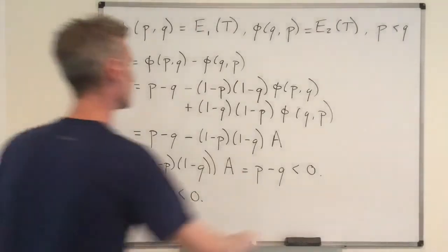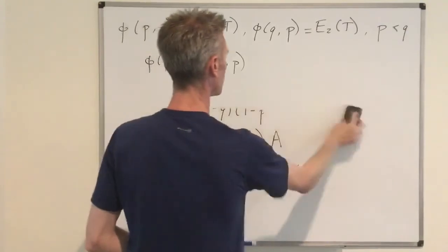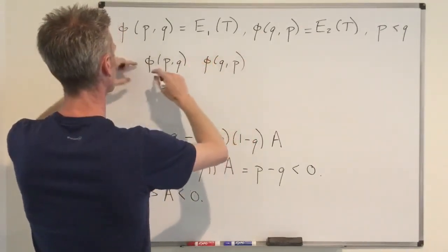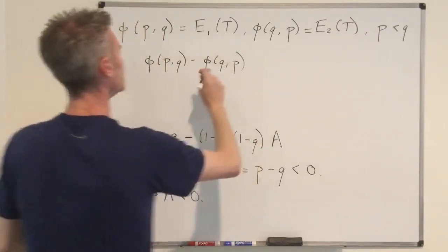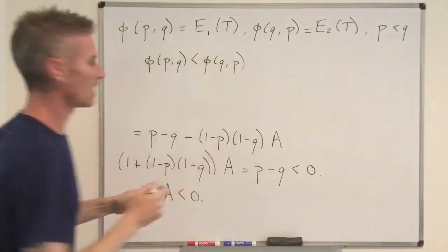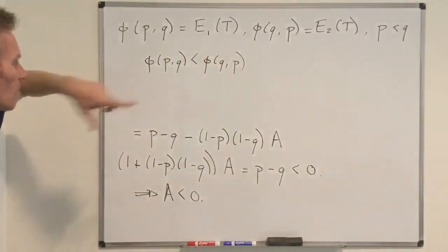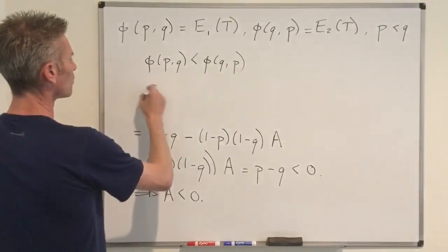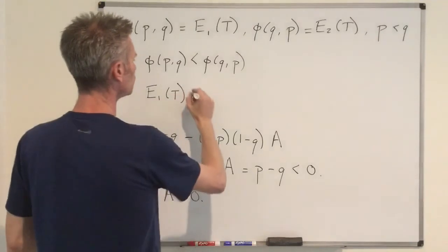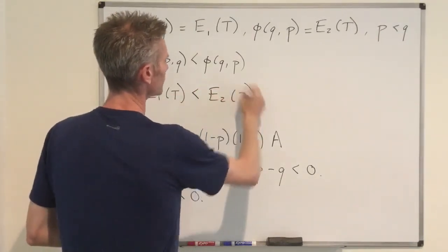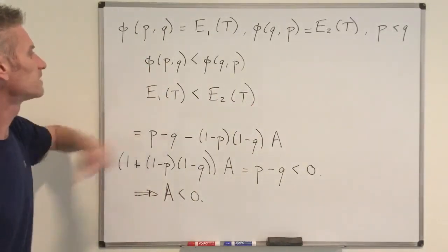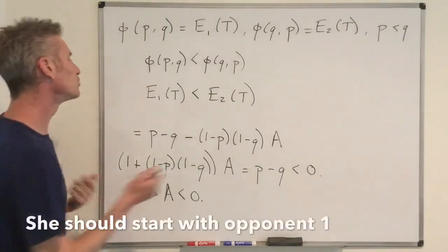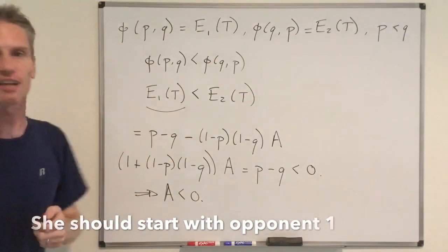So A is negative, meaning φ(P,Q) - φ(Q,P) < 0, which means φ(P,Q) < φ(Q,P). Going back to the definitions, this means the expected number of games starting with player 1 is strictly less than the expected number of games starting with player 2. Therefore, to minimize the expected number of games she has to play, she should start with player 1 — the stronger opponent.